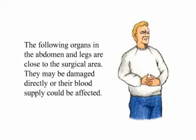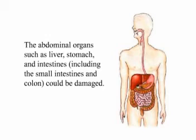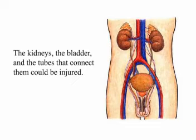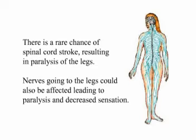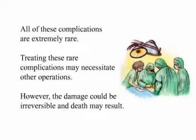The following organs in the abdomen and legs are close to the surgical area and may be damaged directly, or their blood supply could be affected. The abdominal organs such as the liver, stomach, and intestines — including the small intestine and colon — could be damaged. The kidneys, bladder, and the tubes that connect them could be injured. The internal female organs such as the uterus and ovaries could also be damaged. There is a rare chance of spinal cord stroke resulting in paralysis of the legs, and nerves going to the legs could be affected, leading to paralysis and decreased sensation. All of these complications are extremely rare, and treating them may necessitate other operations; however, the damage could be irreversible and death may result.